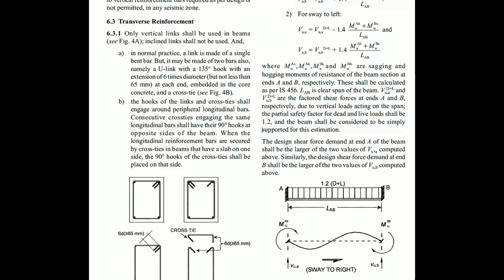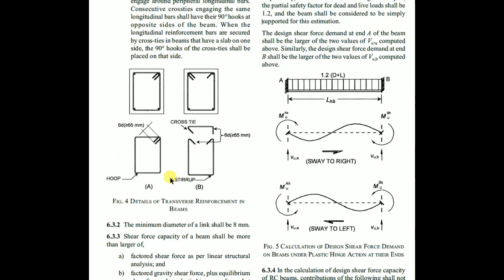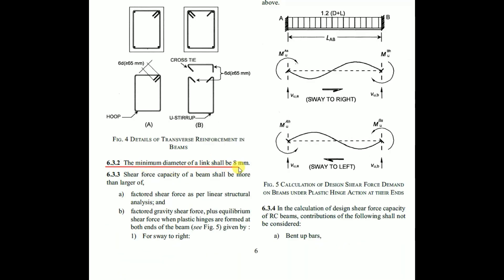For transverse reinforcement, a link is normally made of a single bent bar, but may also be made of two bars — a U-link with a 135-degree hoop with an extension of 6 times the diameter but not less than 65 mm at each end, embedded in the core concrete, under cross-ties, as shown in figure 4b. The minimum diameter of a link shall be 8 mm.